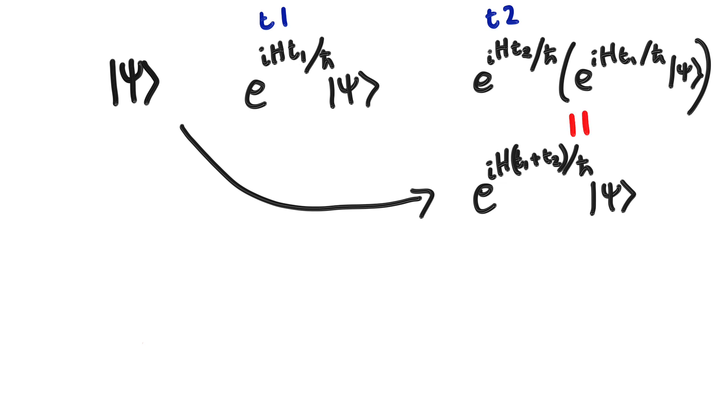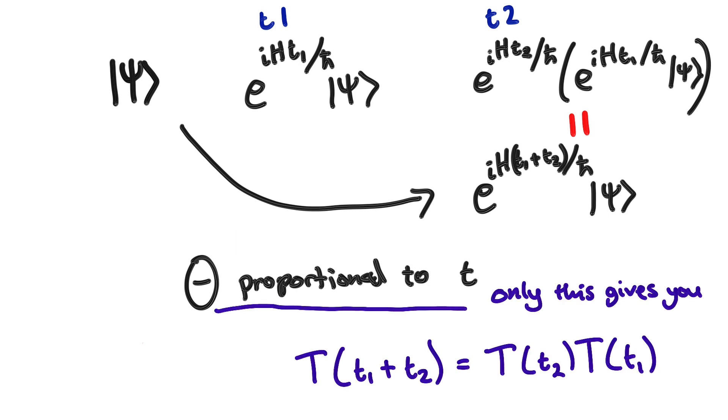This rule is very obvious, but it's something that you really want your time evolution to have. Now remember when I was picking what angle of rotation we wanted, I said it should depend on t. But why not on t² or something else? Because only t would obey this rule. Verify that for yourself.